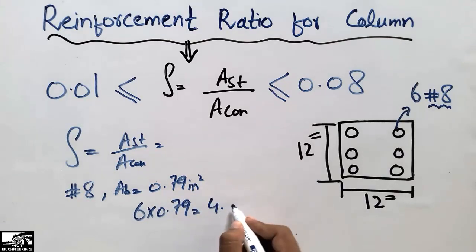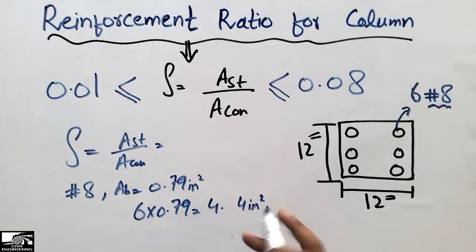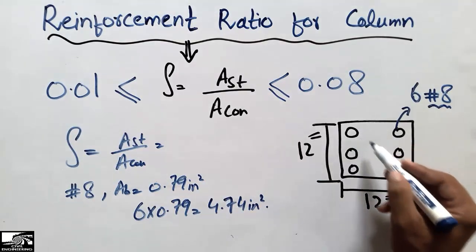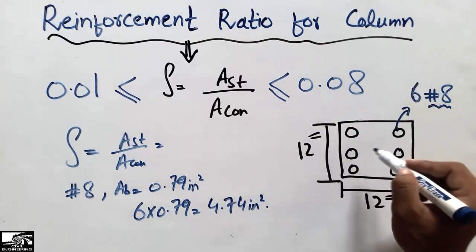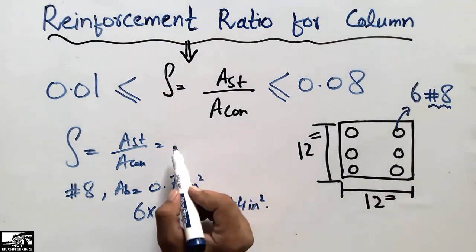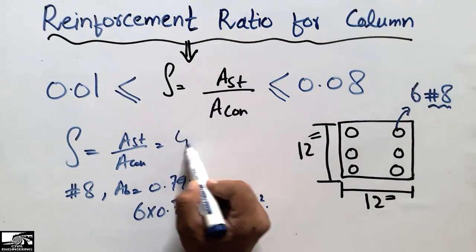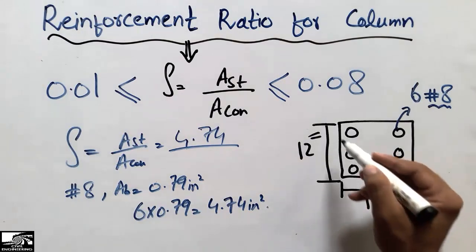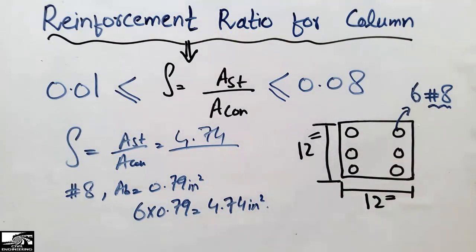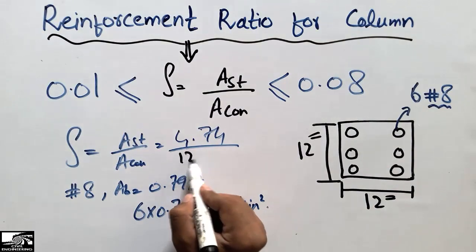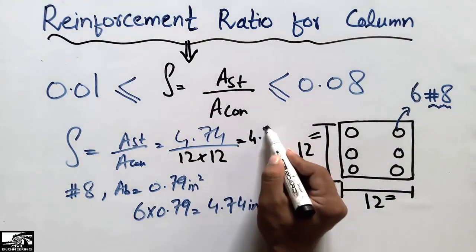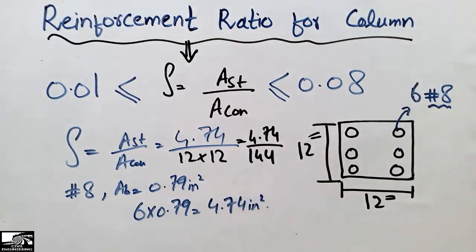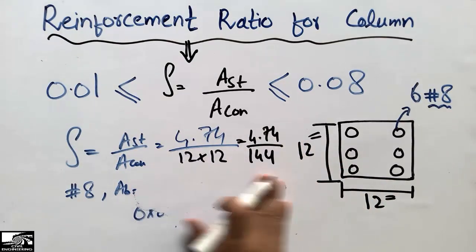The total steel area comes out to be 4.74 square inches of reinforcement used in this column. We place this in the numerator: 4.74, divided by the area of the concrete, which is the total section of 12 inches by 12 inches, giving 144 square inches. So the ratio is 4.74 divided by 144.